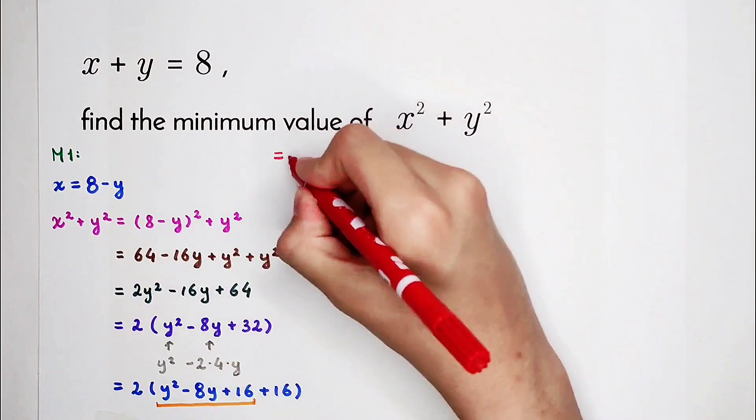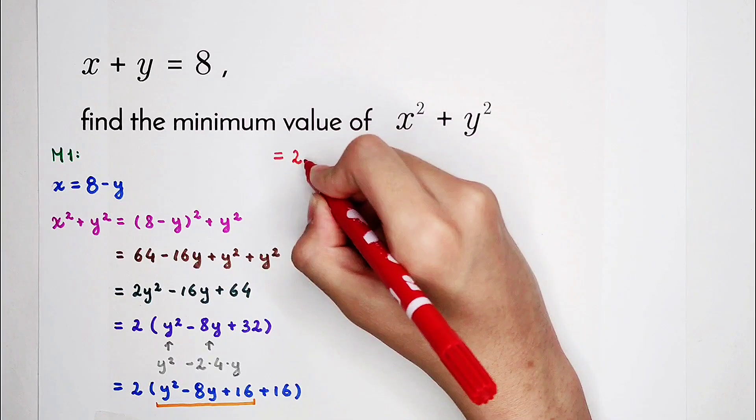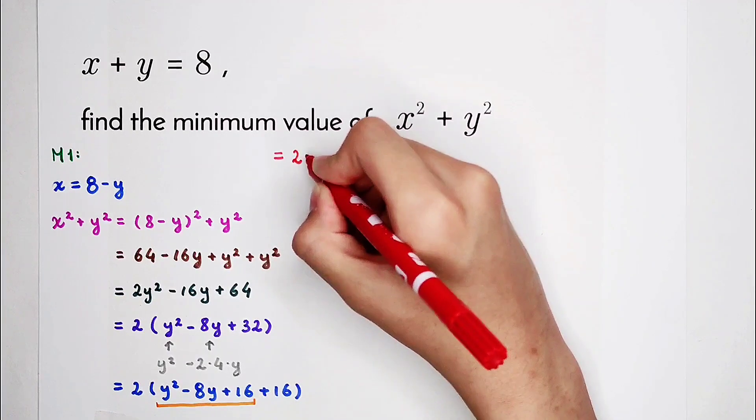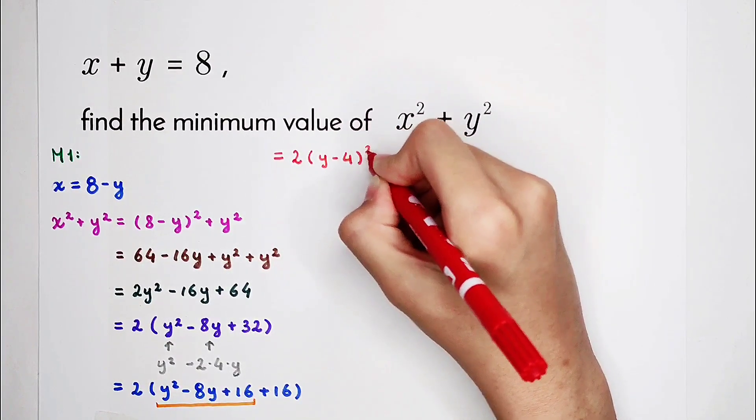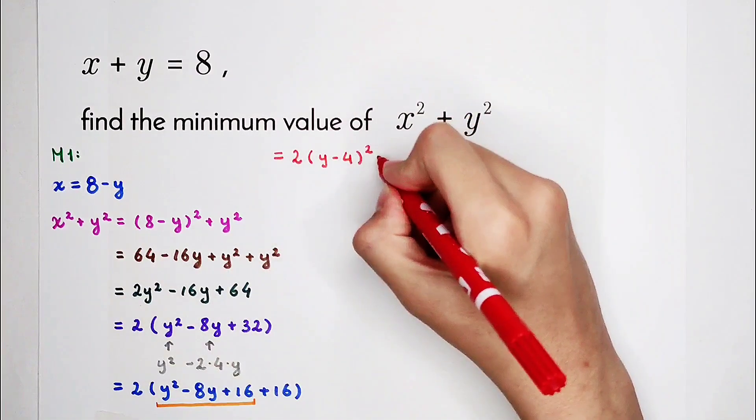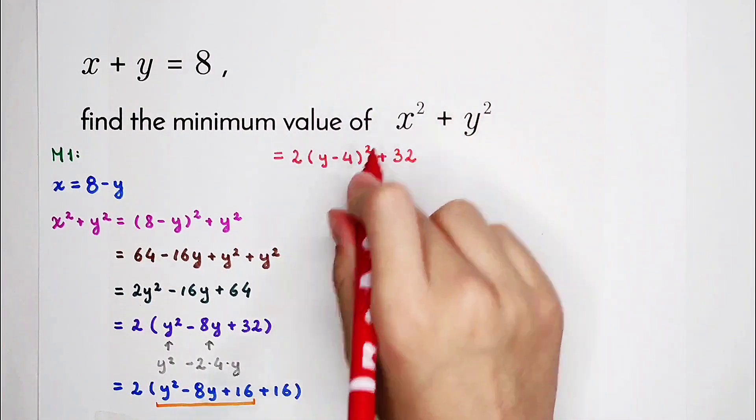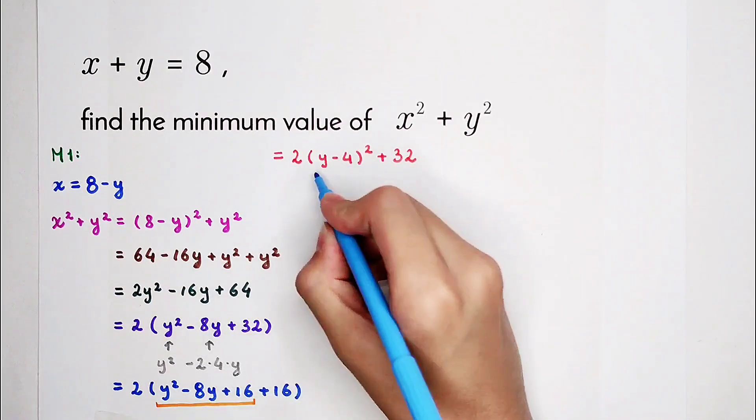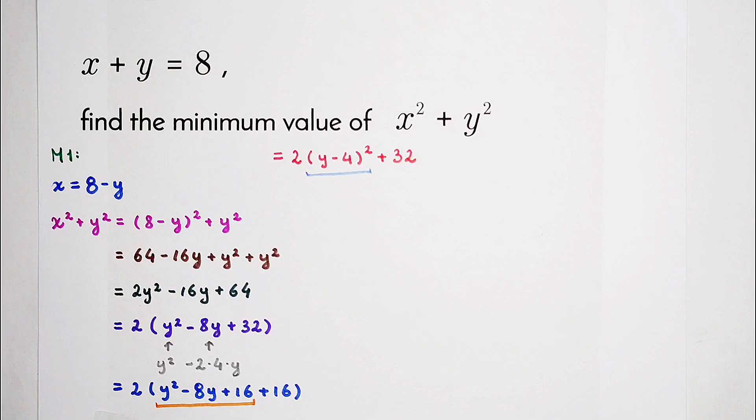So it is equal to... I'm going to write it in this way. It is 2 times y minus 4 all squared, plus 16. Here's a times 2, so now plus 2 times 16, 32. They're actually the same. So now, here, a square term. What should we do with it? Of course, we have succeeded. The success is coming.